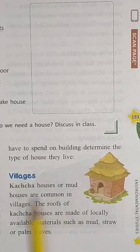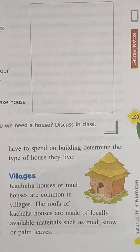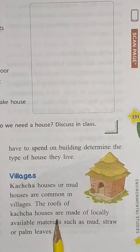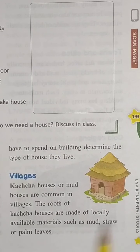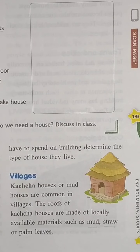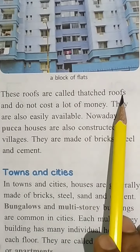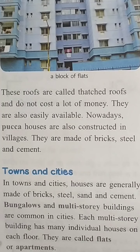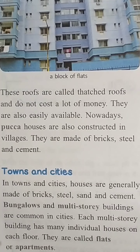Kaccha or mud houses are common in villages. Beeta, kaccha ya mati se bana hua jo ghar hote hai, gaon mein zyada tar dekhne ko milti hai. The roofs of the kaccha houses are made of locally available materials such as mud, straw, or palm leaves. Kaccha house ke jo chhat hote hai, woah locally available materials se bante hain — jaisi ki mud, mati, straw, ghas phoos, or palm leaves. These roofs are called thatched roofs and do not cost a lot of money.